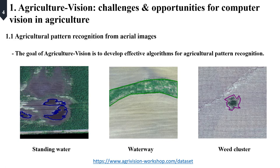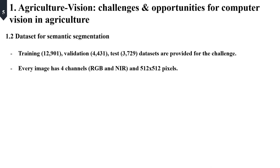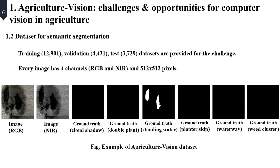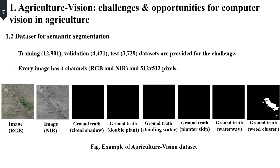In these challenges, datasets are provided, and every image has four channels: RGB and NIR. Ground truth for final classes is provided, and this figure shows an example of the training dataset.